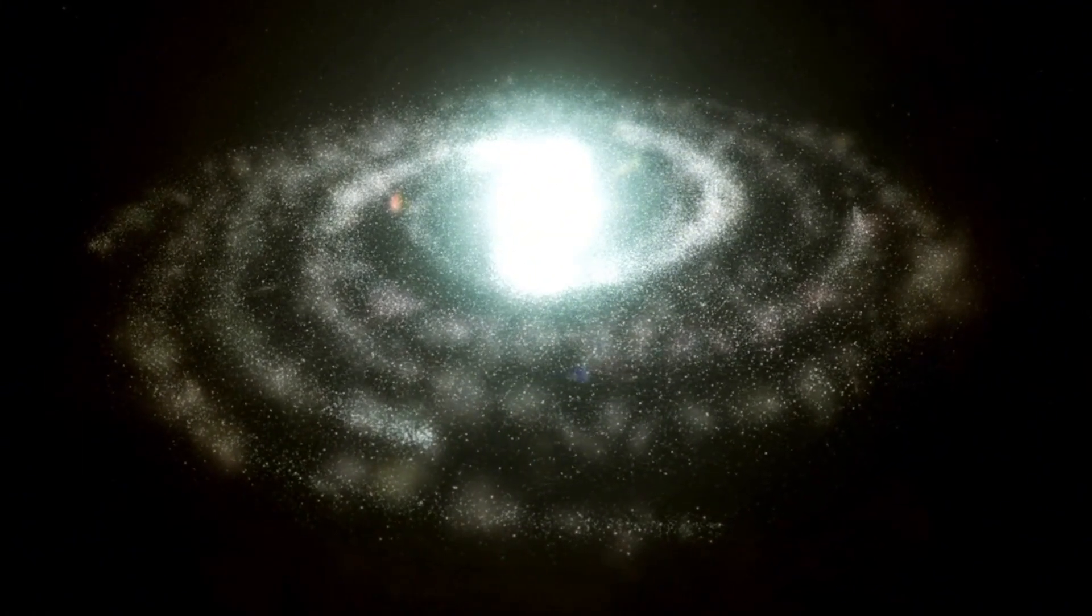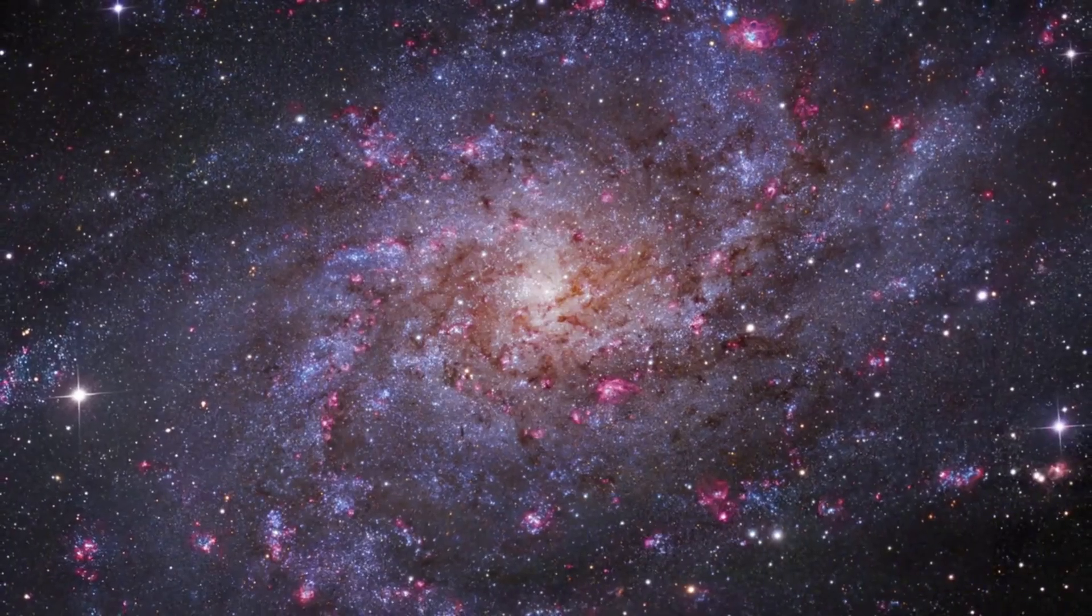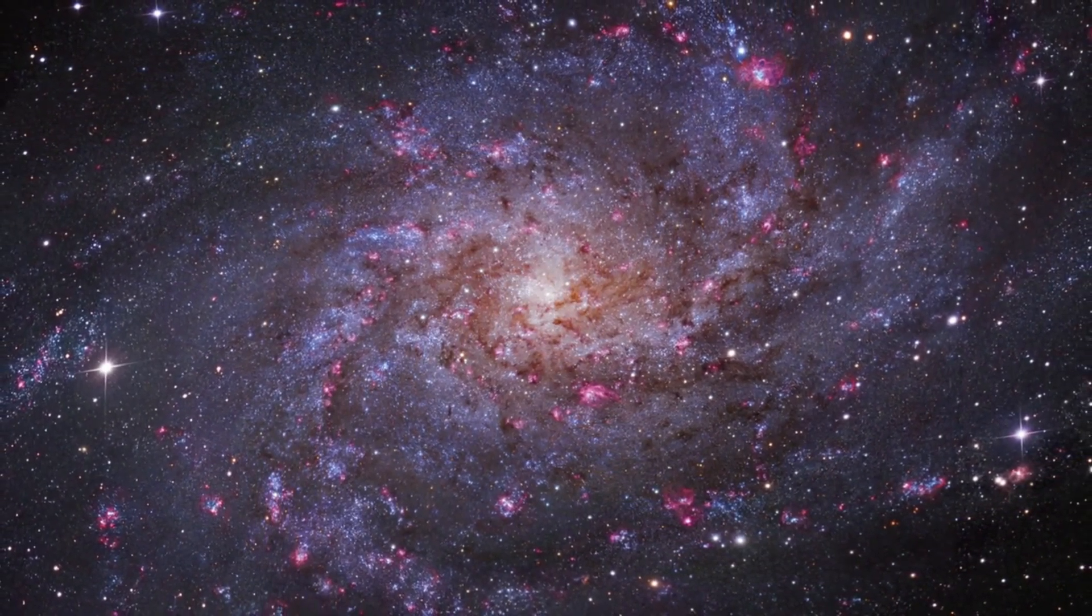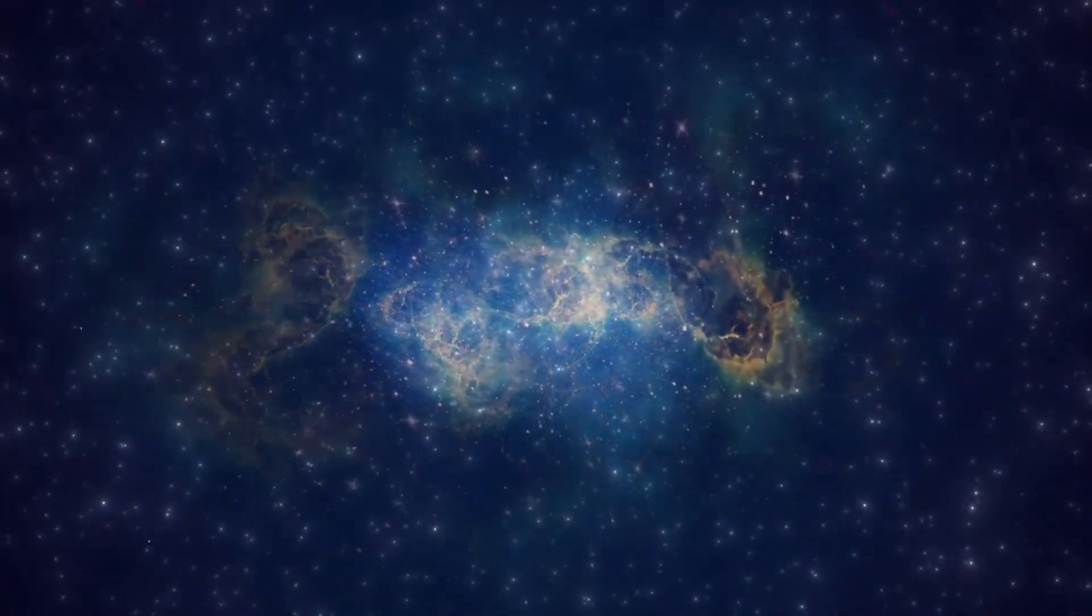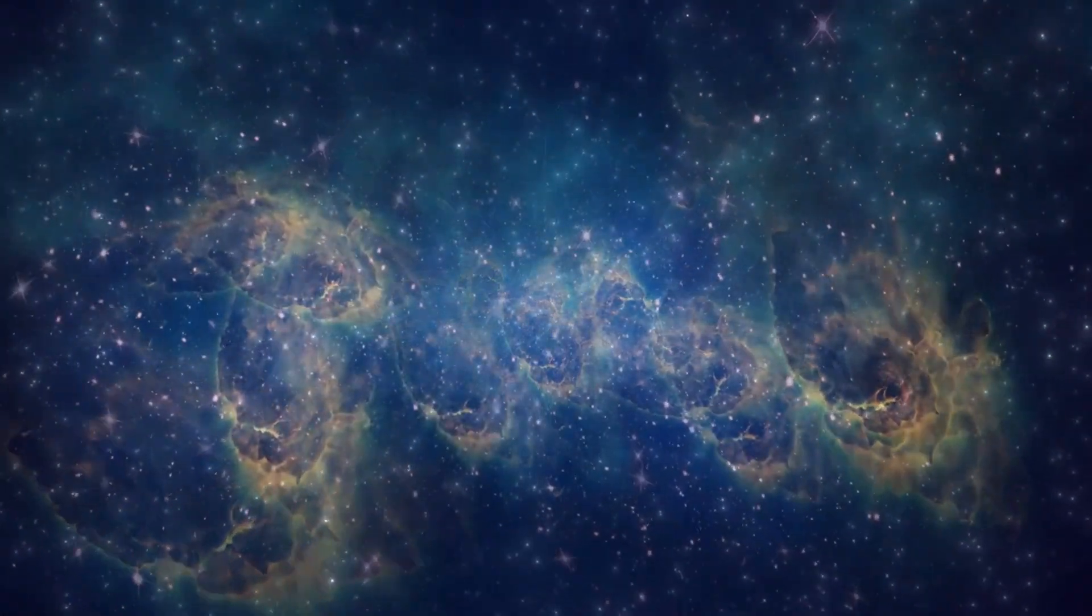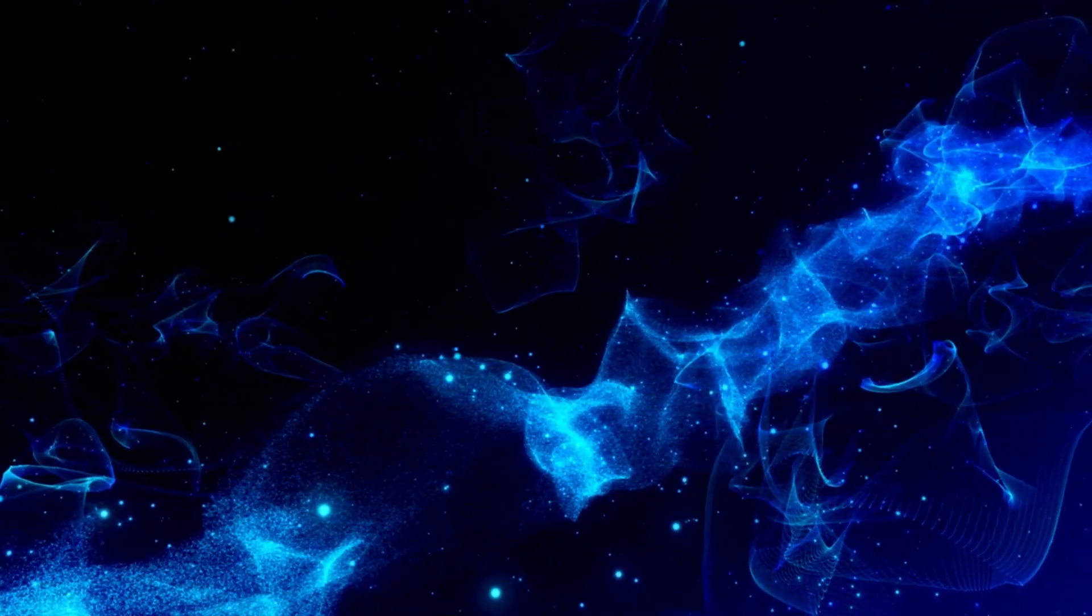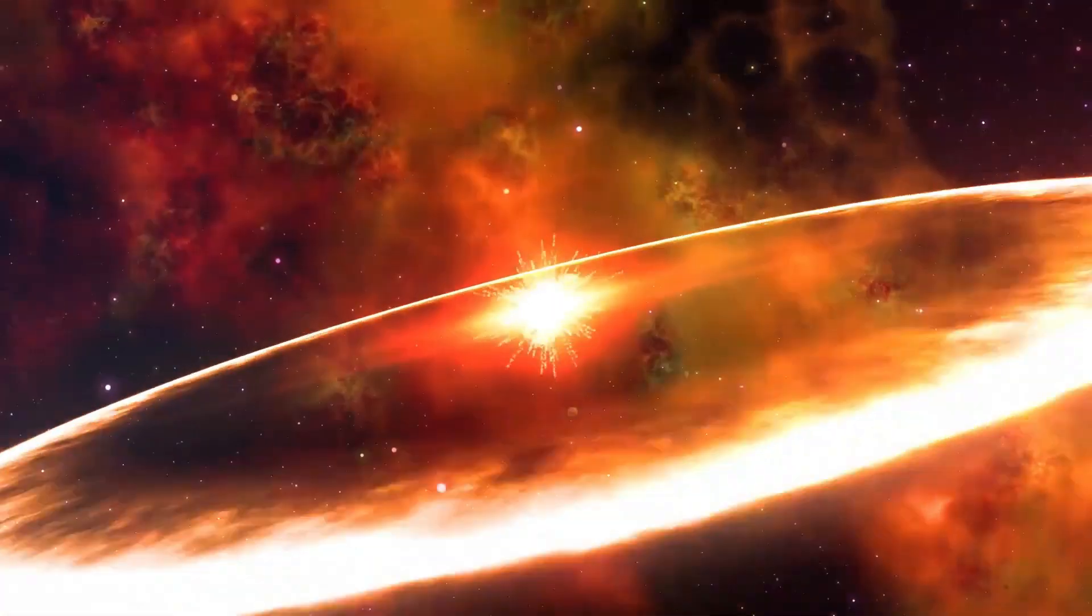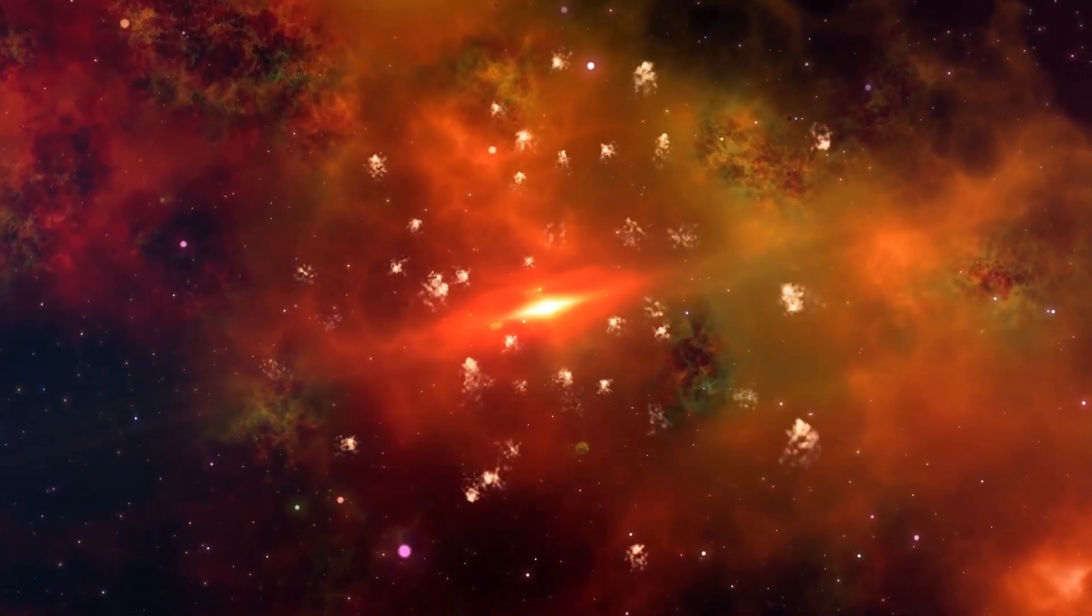As the cycle advances, the number of sunspots increases. Sunspots are areas of intense magnetic activity associated with the rise of magnetic flux from the sun's interior. They appear in pairs with opposite magnetic polarities and advance toward the equator over time. Around the midpoint of the solar cycle, the sun reaches solar maximum, a period of peak activity with the largest number of sunspots, solar flares, and coronal mass ejections. The magnetic field becomes increasingly complicated and tangled.